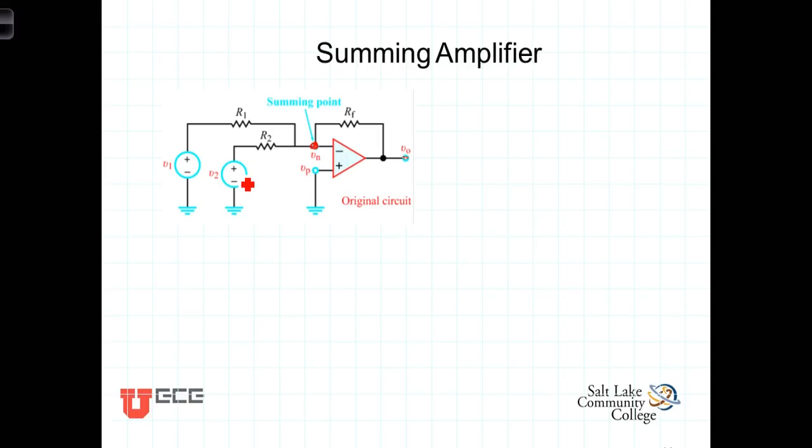To analyze this we're going to do as we always have and that is write a node equation at the inverting terminal. Once again we have the virtual short here that tells us that V sub n is equal to V sub p, and again in this case the non-inverting terminal is tied to ground so V sub n is going to equal zero. But we'll leave V sub n in there to see what's happening and then as we move along we'll replace V sub n with zero.